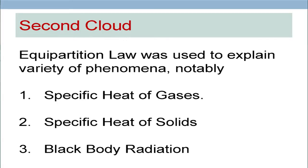So what we are talking about is the second cloud of classical physics. In the first lecture, we talked about the two clouds on classical physics. One was about the motion of earth in ether, which we have discussed in detail. The second was about the equipartition law. This particular equipartition law was used to explain a variety of phenomena in classical physics — specifically the specific heat of gases, the specific heat of solids, and black body radiation.